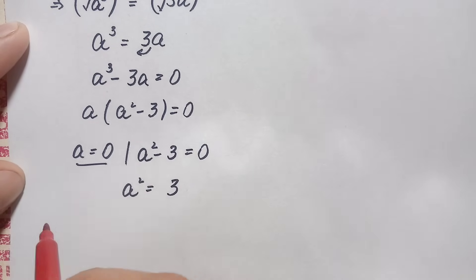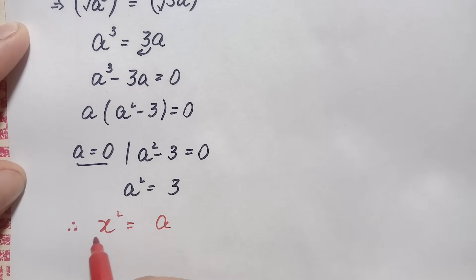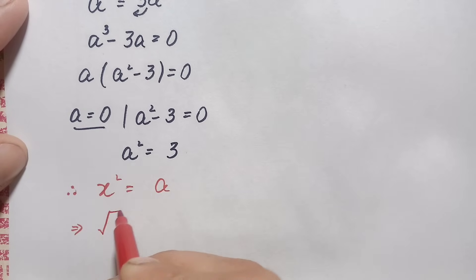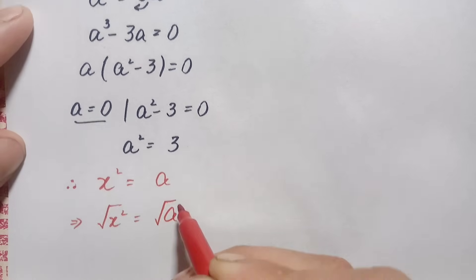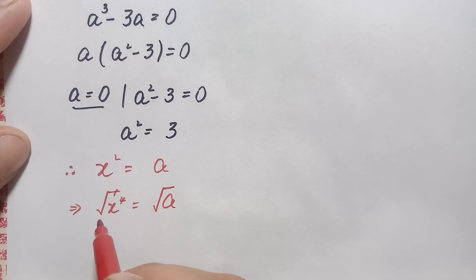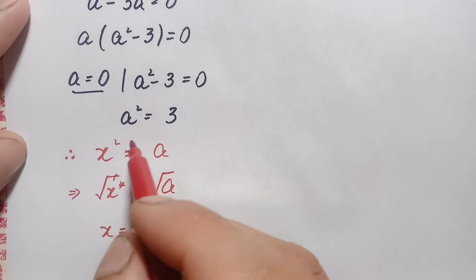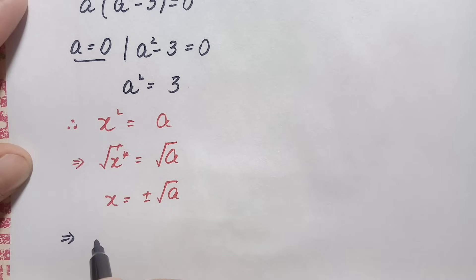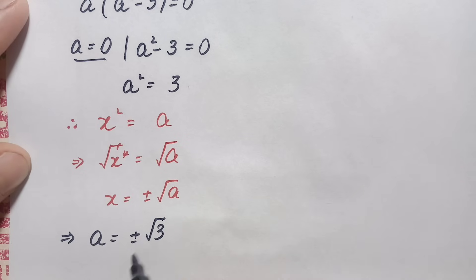We will use the known result: when x squared equals a, taking the square root of both sides gives x is equal to plus or minus the whole square root of a. Applying this result to our equation a squared equals 3, we get a is equal to plus or minus the whole square root of 3.